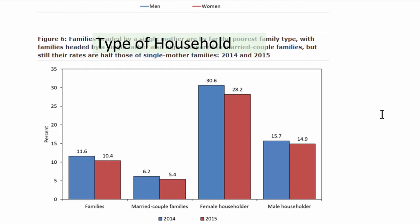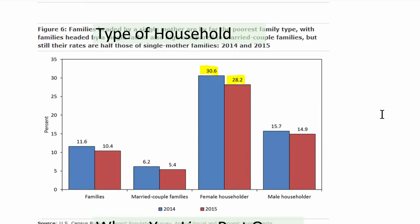Looking at household type, families led by a female householder have very high poverty rates compared to the overall poverty rate — about double. Male householders in a similar situation are much less likely to be in poverty. Married couple families have the lowest poverty rates, as there's usually the opportunity for two income earners, dramatically decreasing chances of living in poverty.